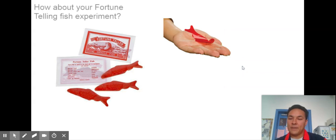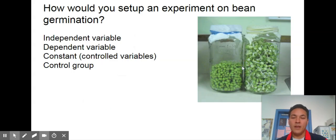Could you talk about your fortune telling fish experiment that I had you write up on the very first day of school? What was the independent variable? What was the dependent variable? What were the control variables? How would you set up an experiment on bean germination? What could be the different independent variables you could test?